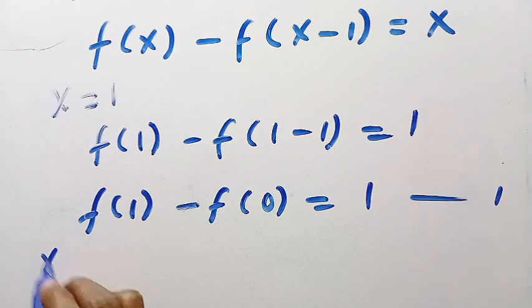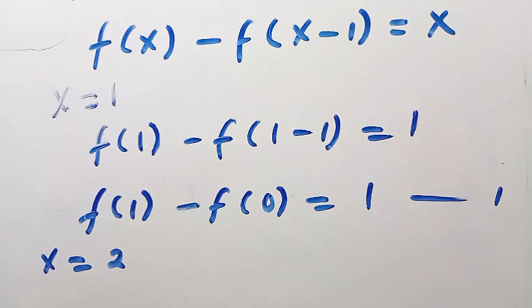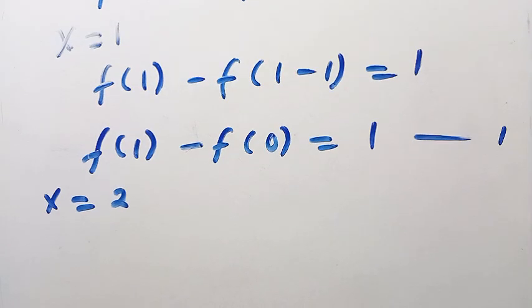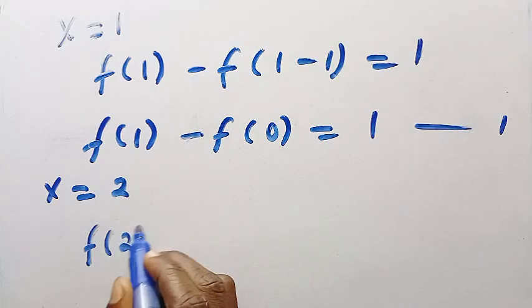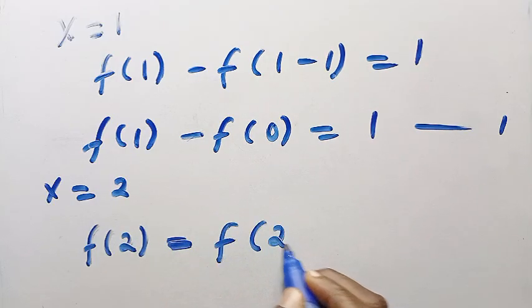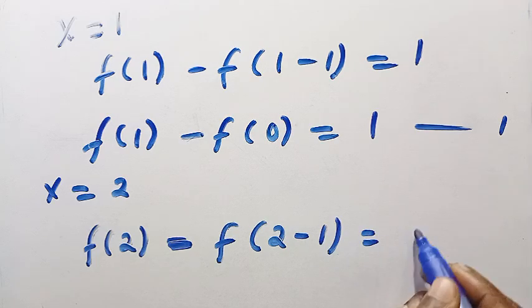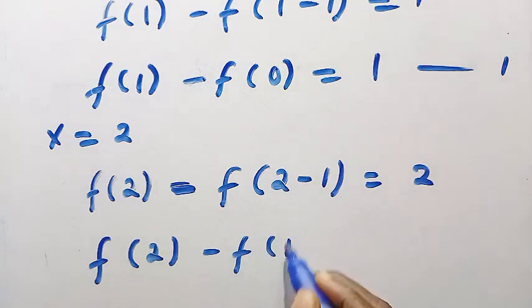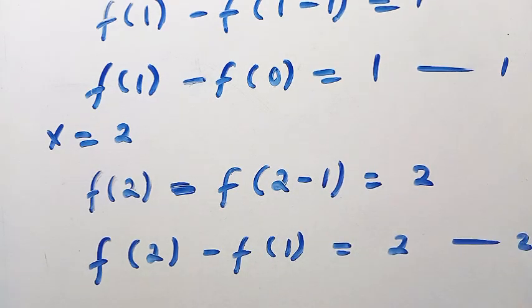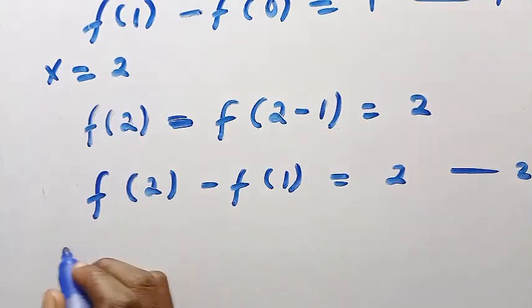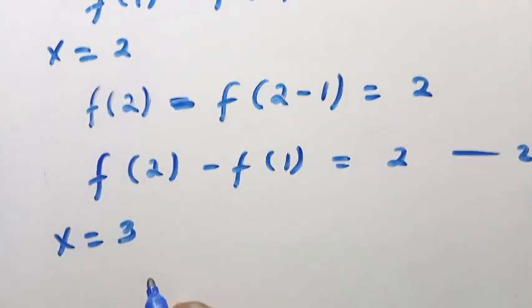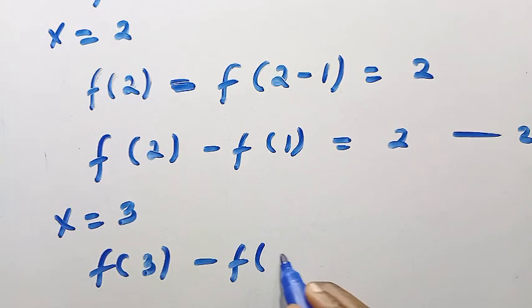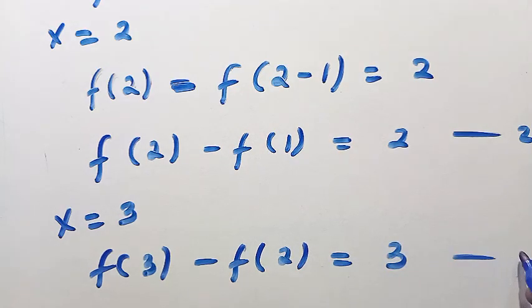And again, if we have x = 2, this is more of iterations. We keep iterating to some point where we are going to conclude. If x = 2, we have f(2) - f(1) = 2. And again, if we have x = 3, we are going to have f(3) - f(2) = 3.